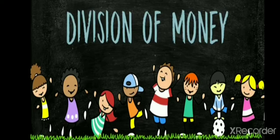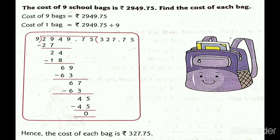Now let's understand division of money. The question: the cost of 9 school bags is rupees 2949.75 — find the cost of each bag. Since the cost of 9 bags is given, divide the total amount by 9. After performing the division, the cost of each bag is rupees 327.75, or 327 rupees and 75 paise.